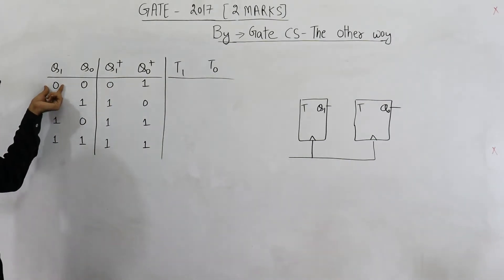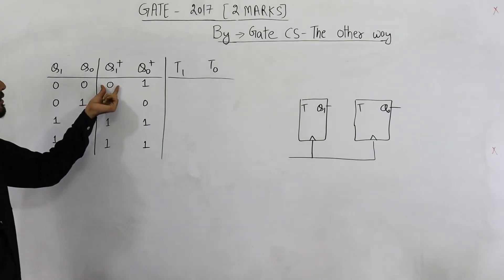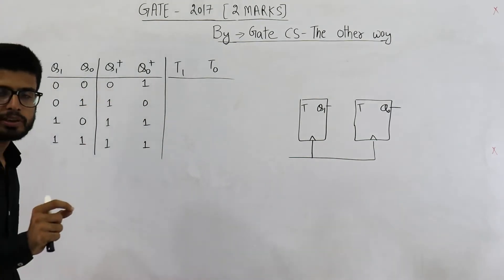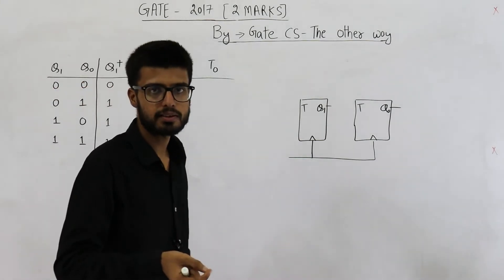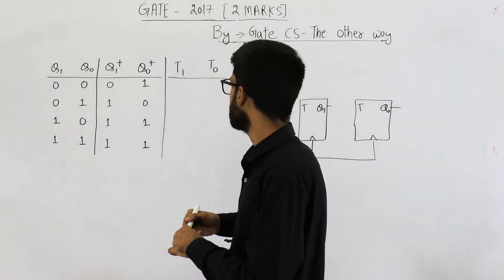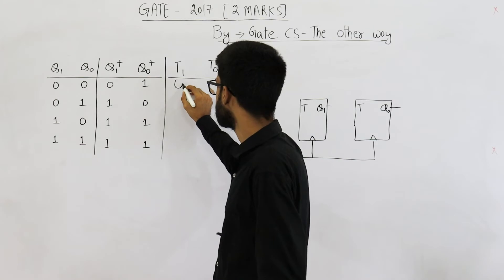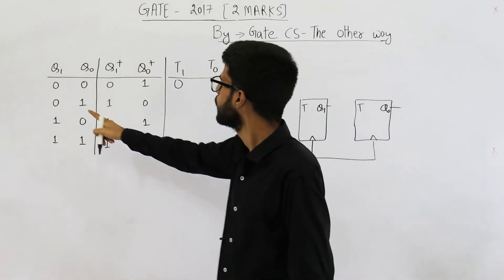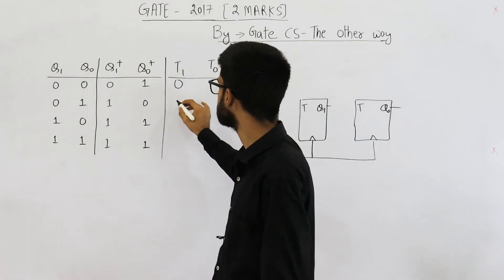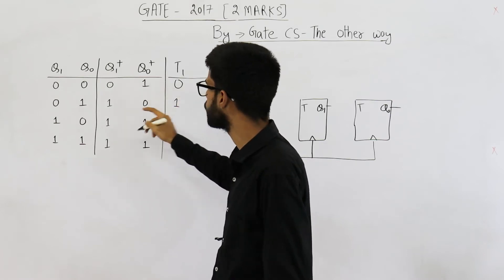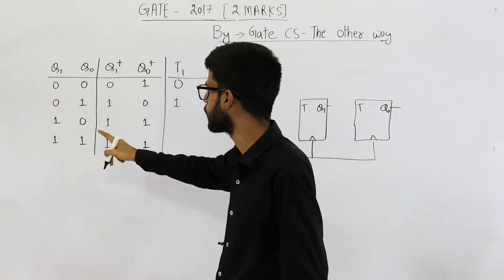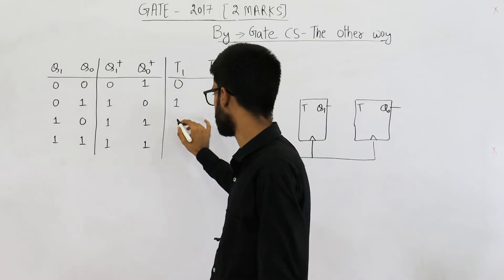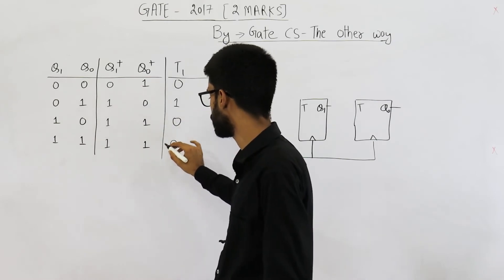Look, current state of Q1 is 0, the next state is also 0. That means we want to keep the output as it is. We don't want to toggle. If we don't want to toggle, T must be 0. Here we want to change the state. That means T must be 1. We want to change the output from 0 to 1. Here we don't want to change, so 0. Here also we don't want to change, 0.